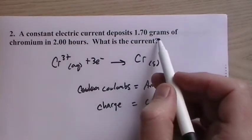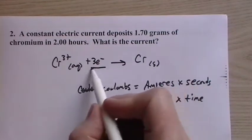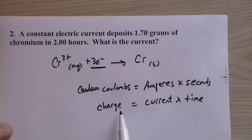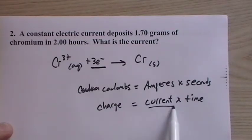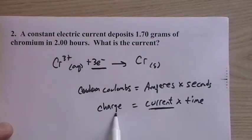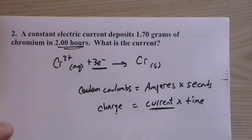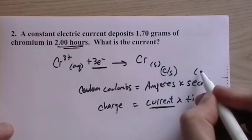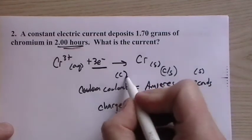And we're going to change the grams of chromium to moles of chromium and then to moles of electrons. And using Faraday's constant, we're going to convert that over to charge. And then, once we, once we have charge, we're going to take charge divided by the time will give us the current. So we're going to take grams and convert all the way to charge. We know that two hours are going to change that to seconds because amperes are in terms of coulombs per second.